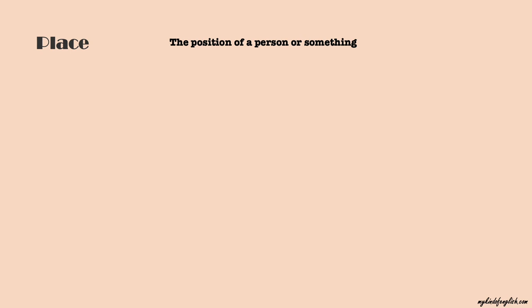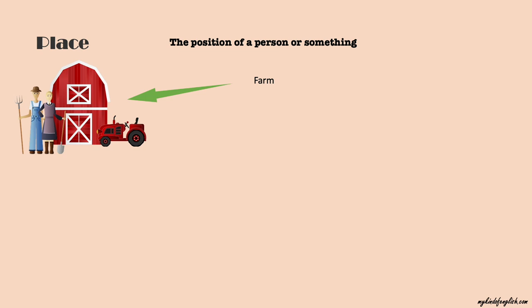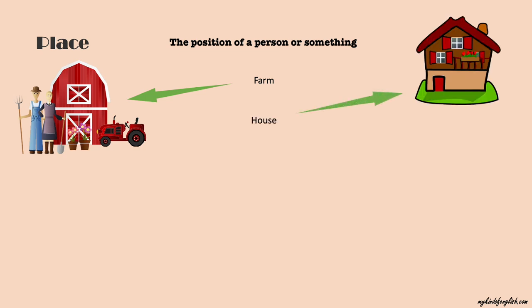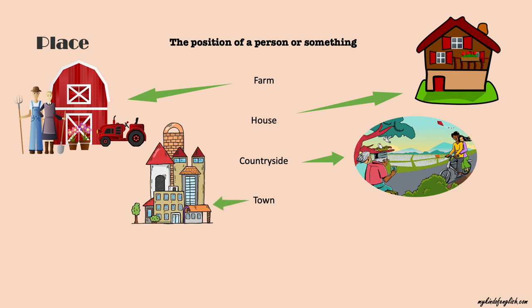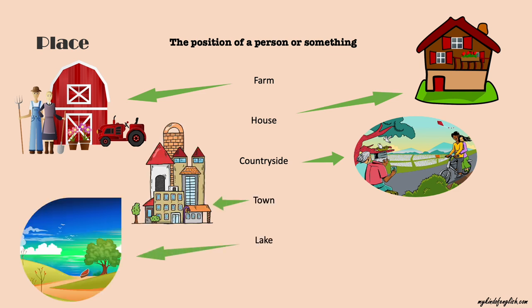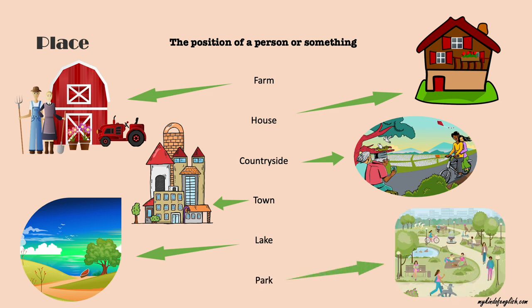A noun is a place — the position of a person or something. For example: down on the farm, out in the countryside, downtown, on the lake, in the park.